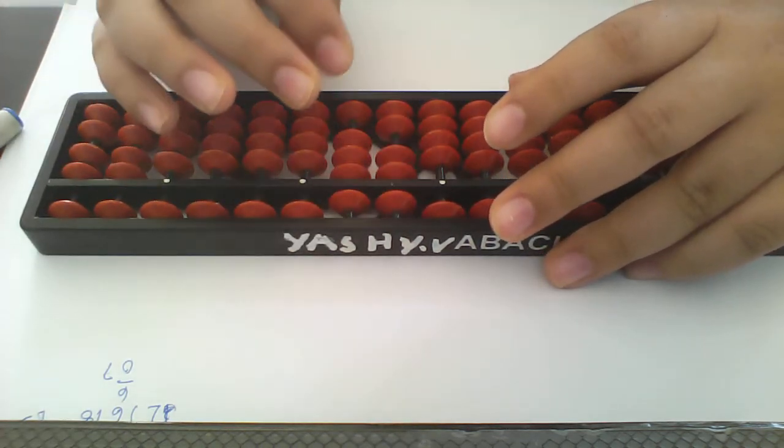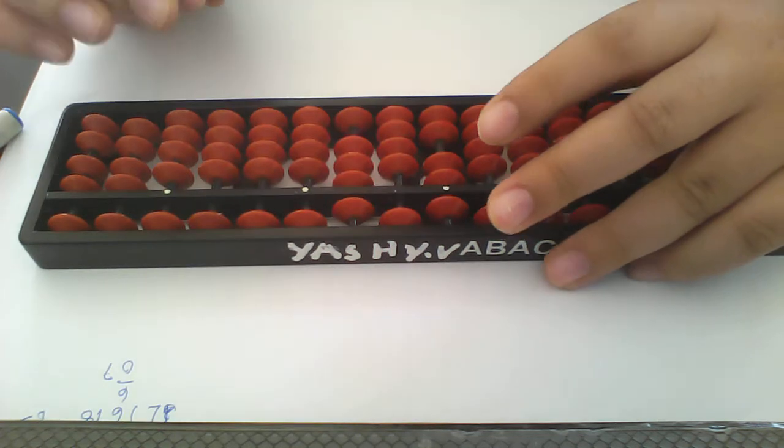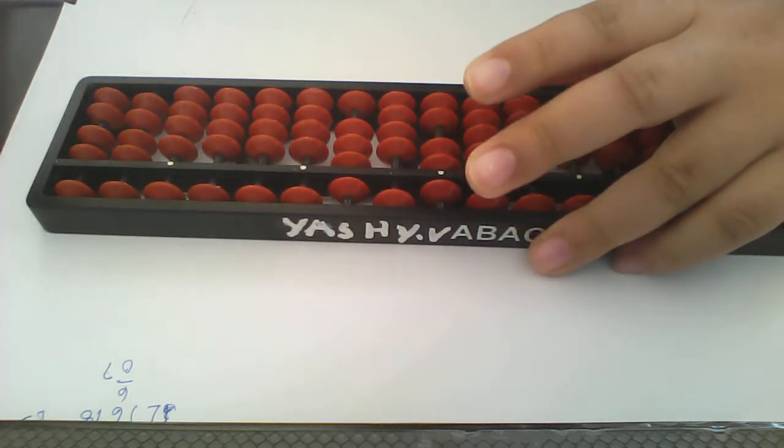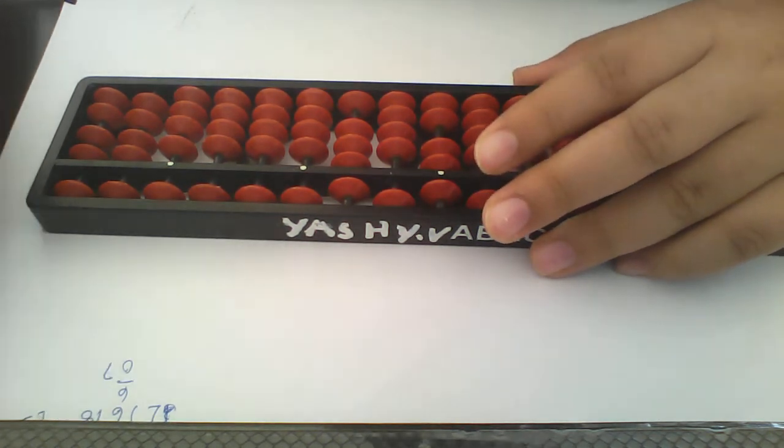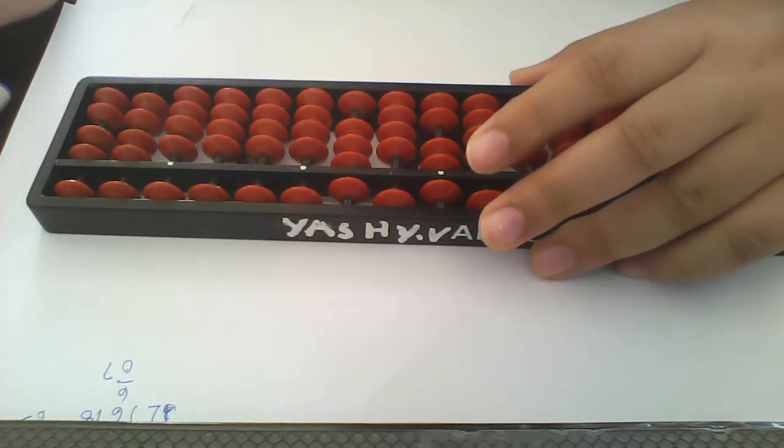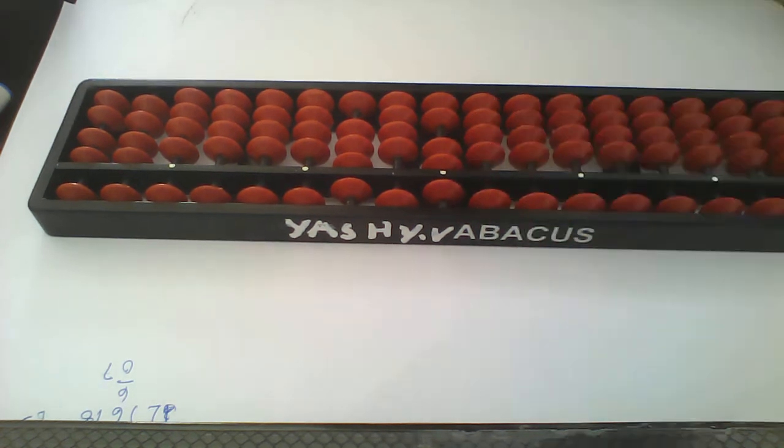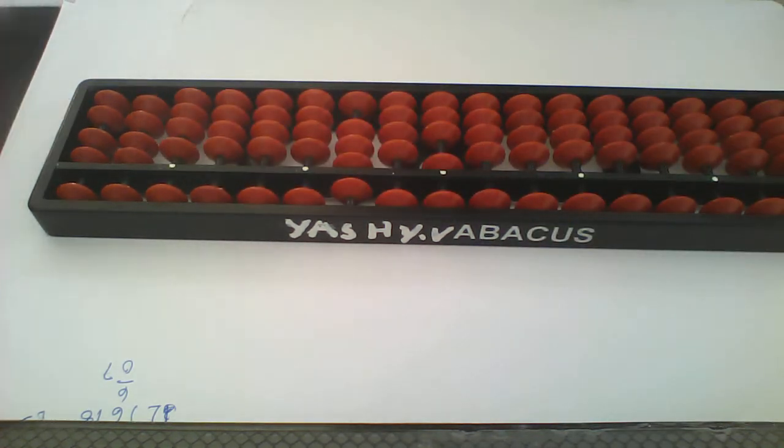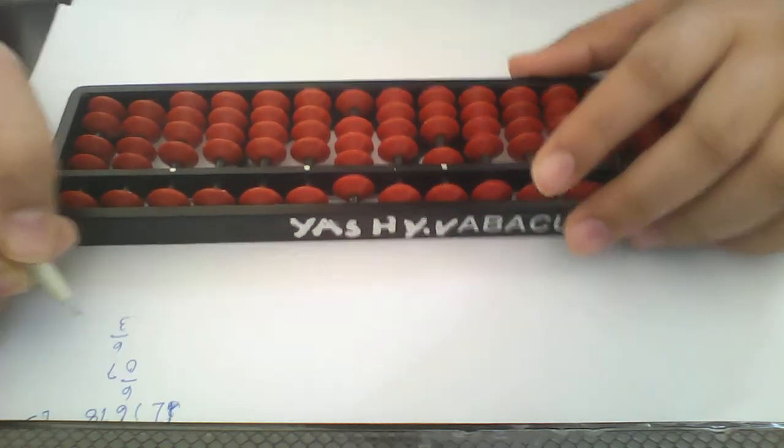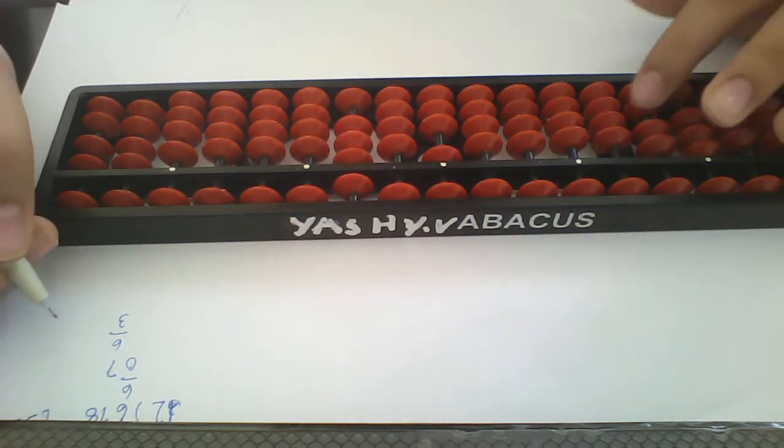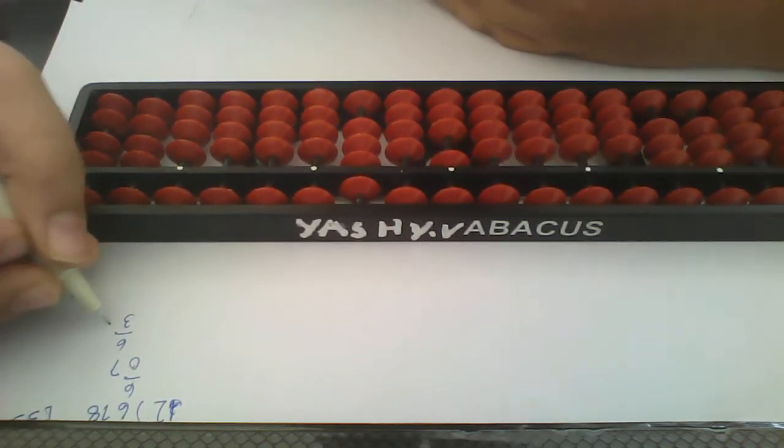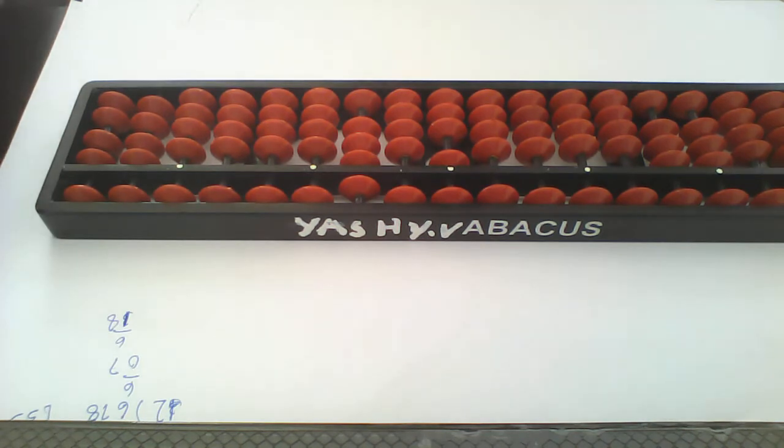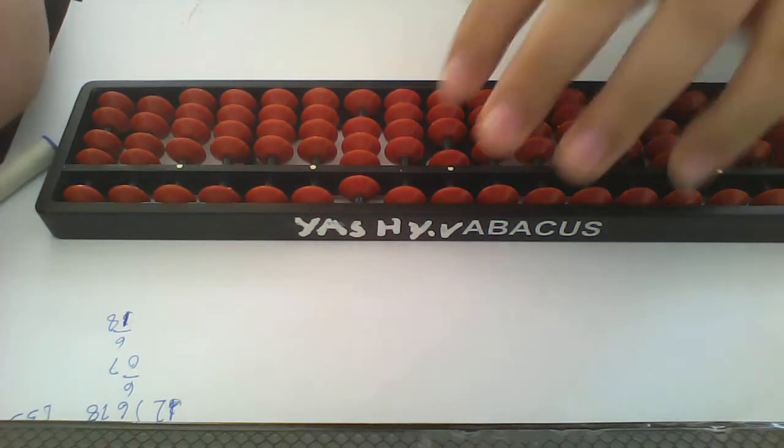Down 7. So now 7, what we will do? We will put again the same 3. Minus 6. 3. And now the remainder is 18.